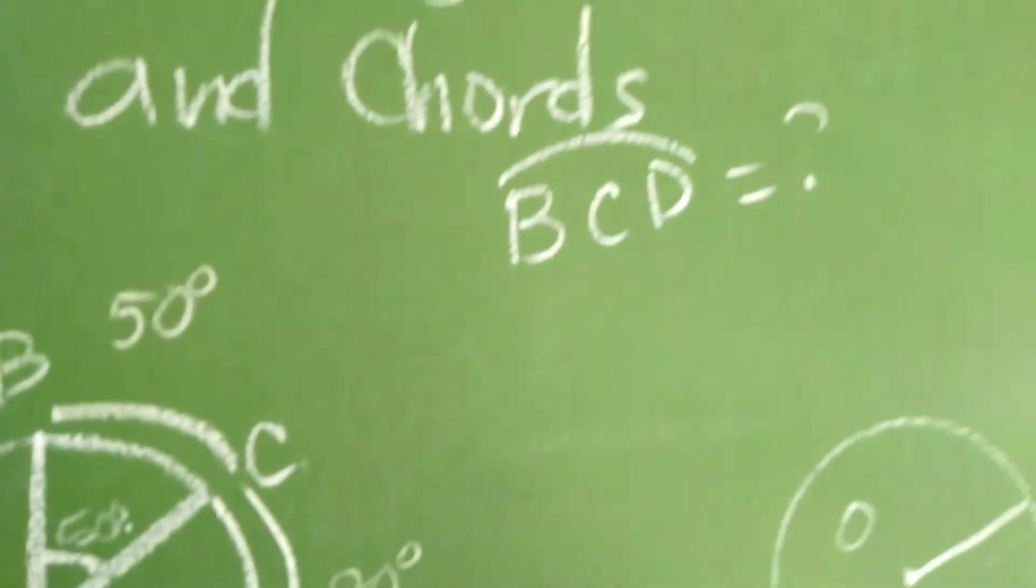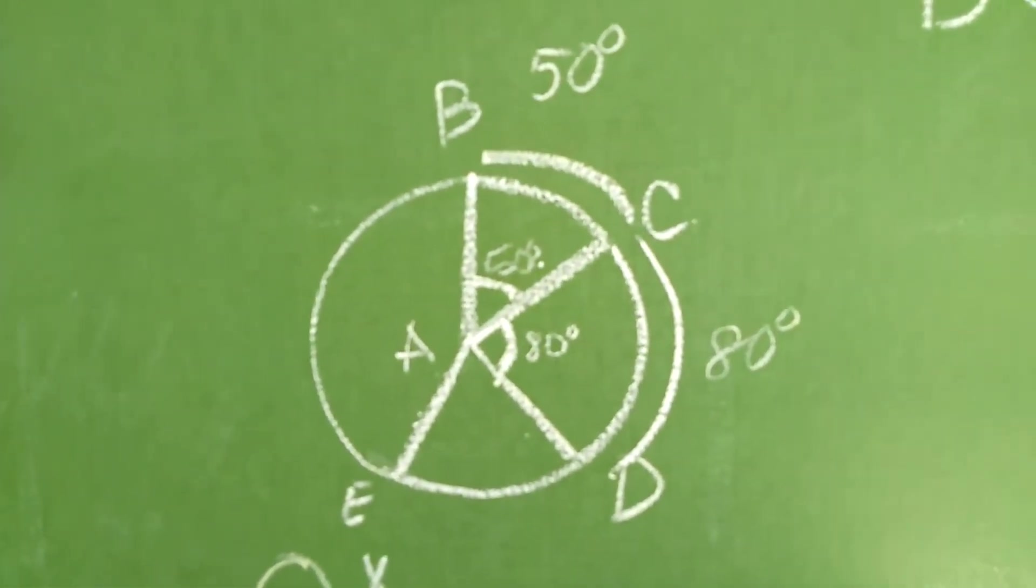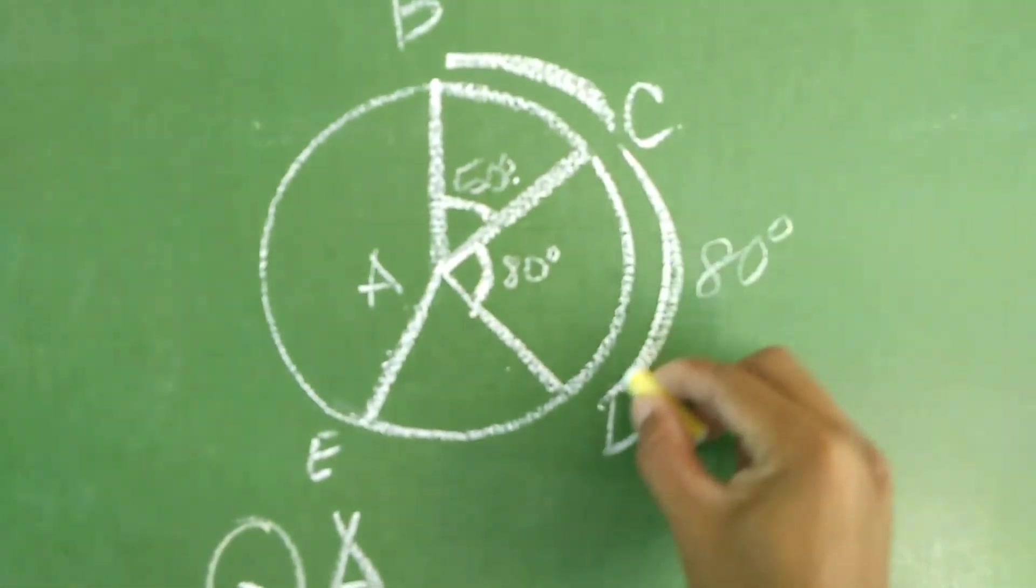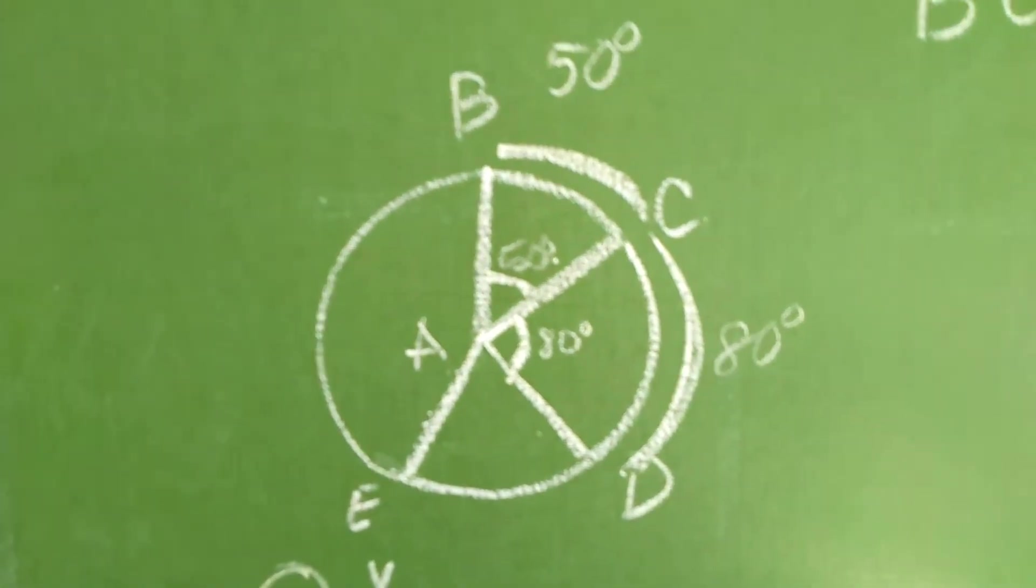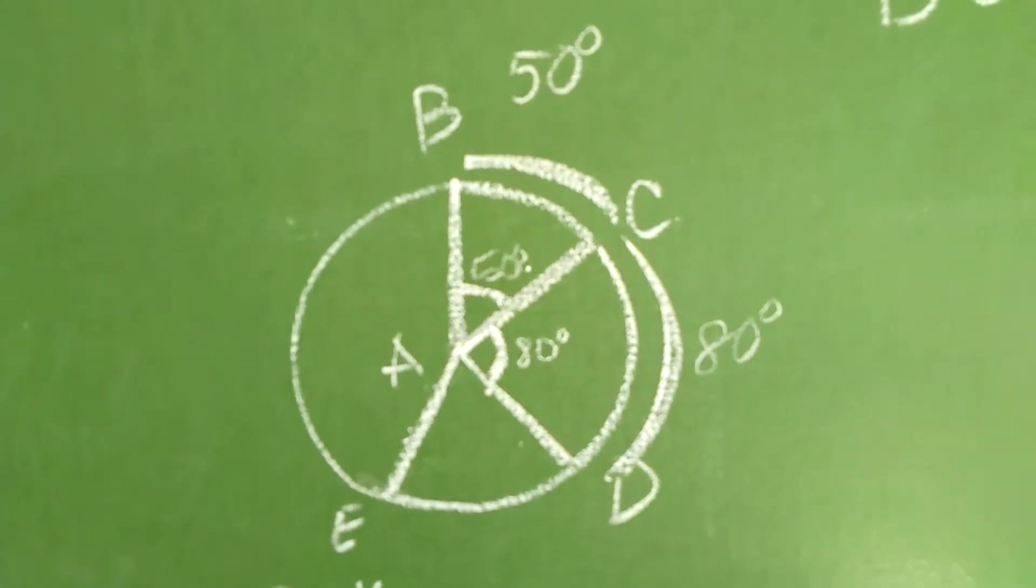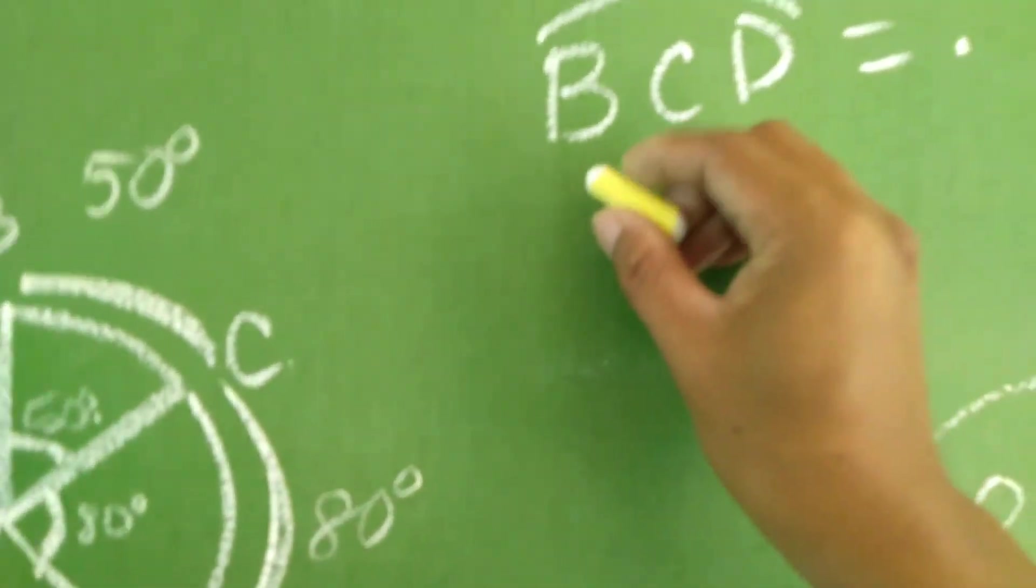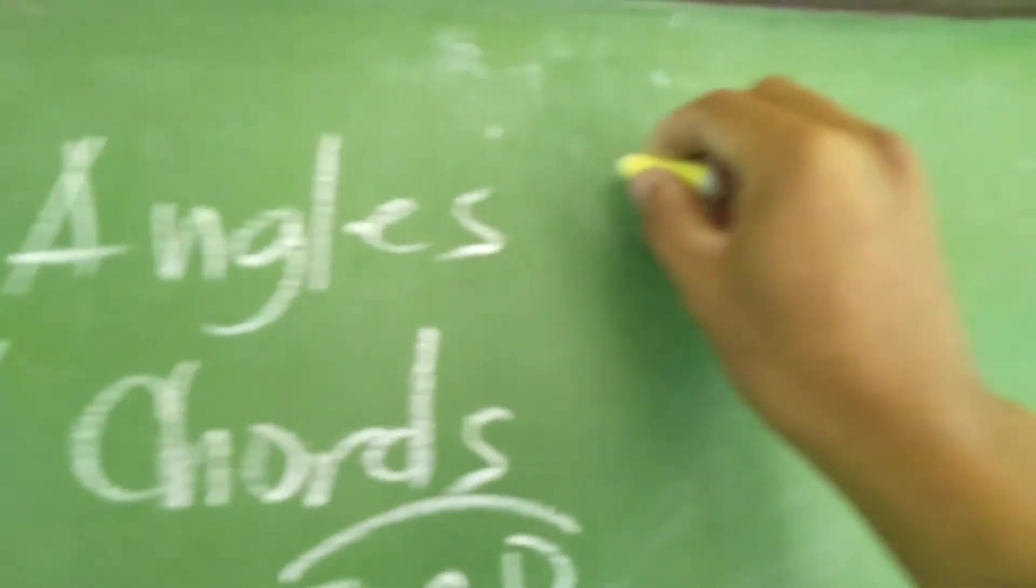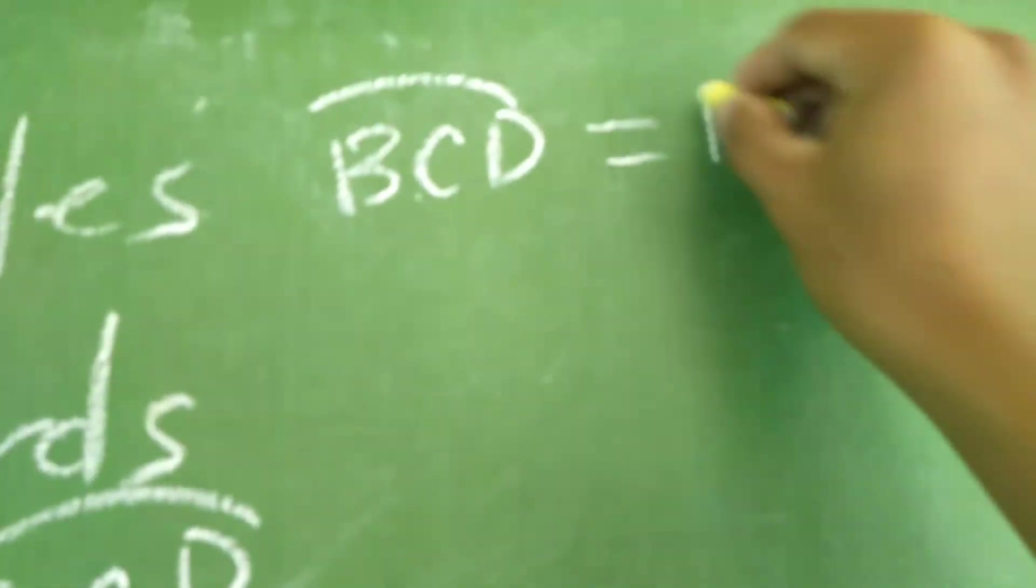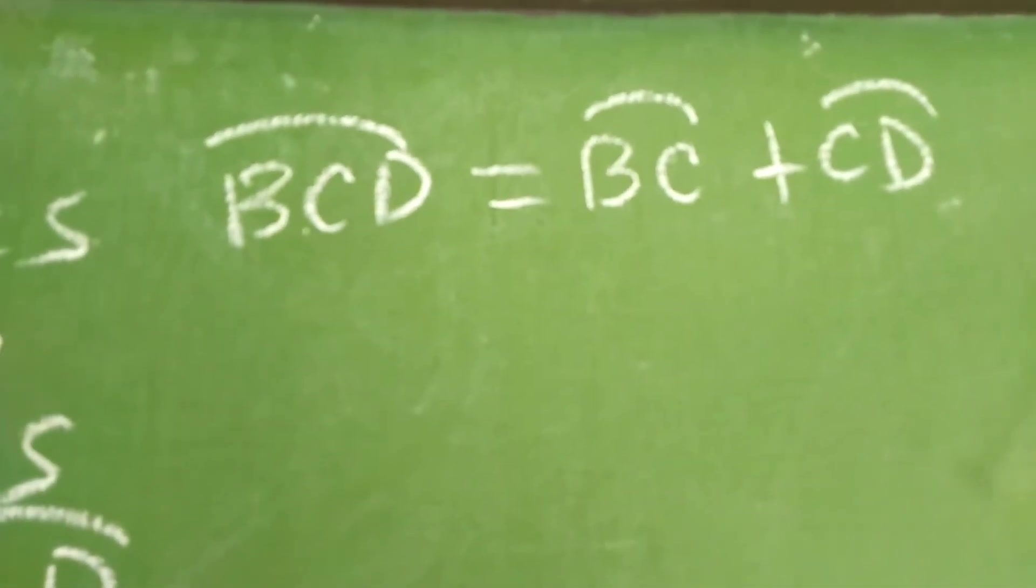What is the measurement of the arc B, C, D? At ito po, yung binigay ni teacher. Okay? B, C, meron na pong measurement. C, D, meron na rin pong measurement. So, meaning to say, madali na lang po para sa atin, nag-a-add lang po tayo. This is the arc addition postulate. Okay? So, we have, lakihan pong konti dito. Okay. B, C, D is equals to B, C plus C, D.